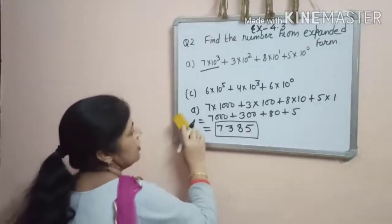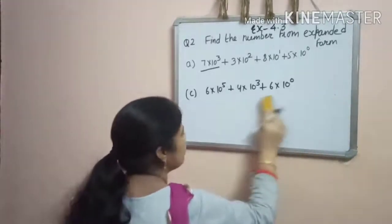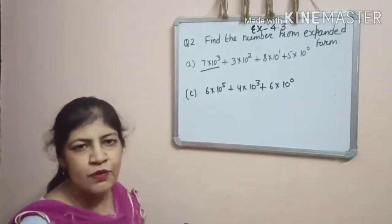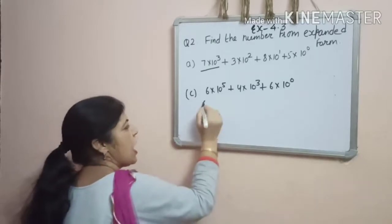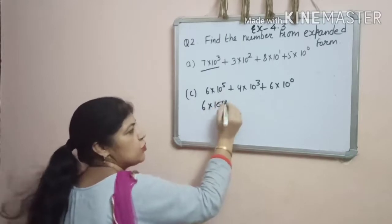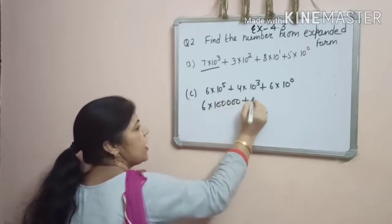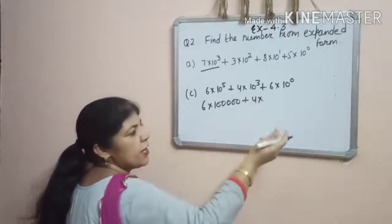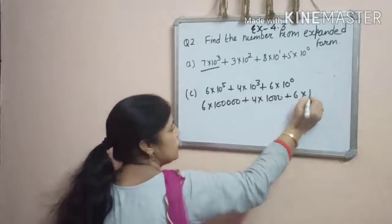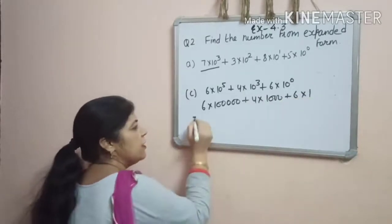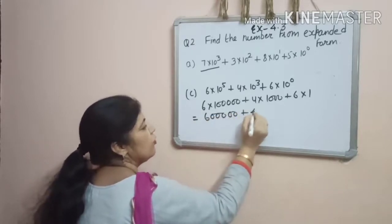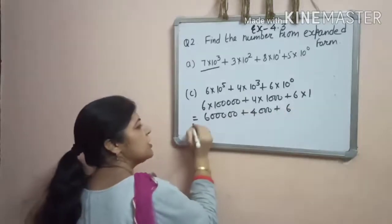Now let's see the next part. Here, 6 into 10 raised to the power 5. Plus 4 into 10 raised to the power 3 means 1000. And 6 into 10 raised to the power 0 is 1. So we get 600,000, plus 4,000, and plus 6.